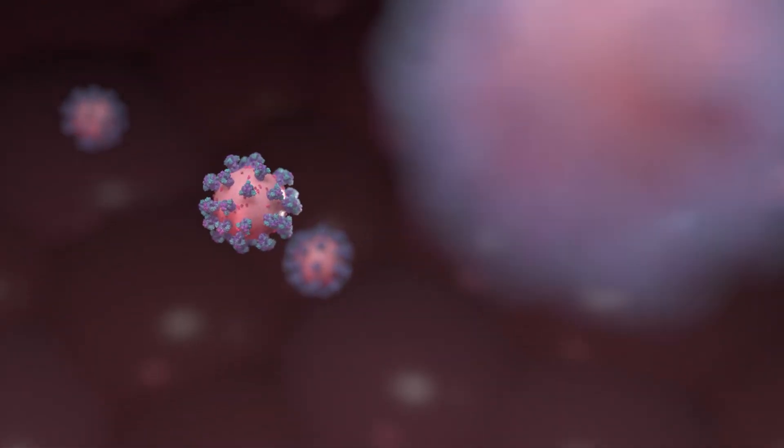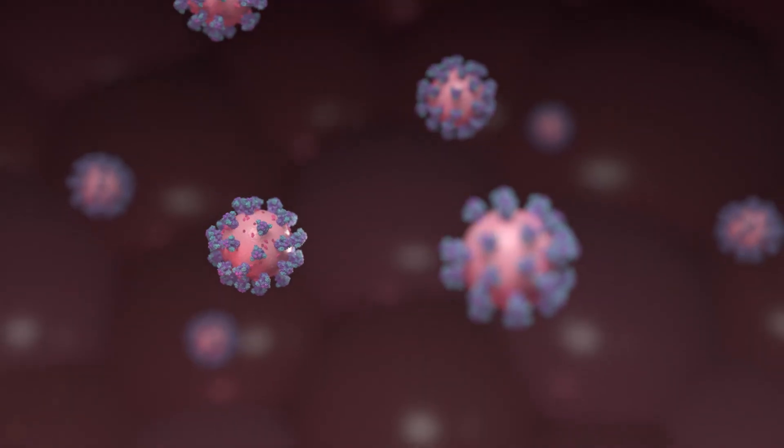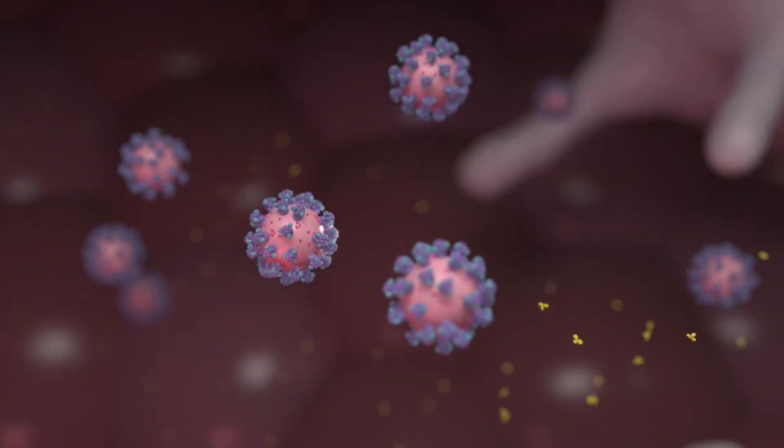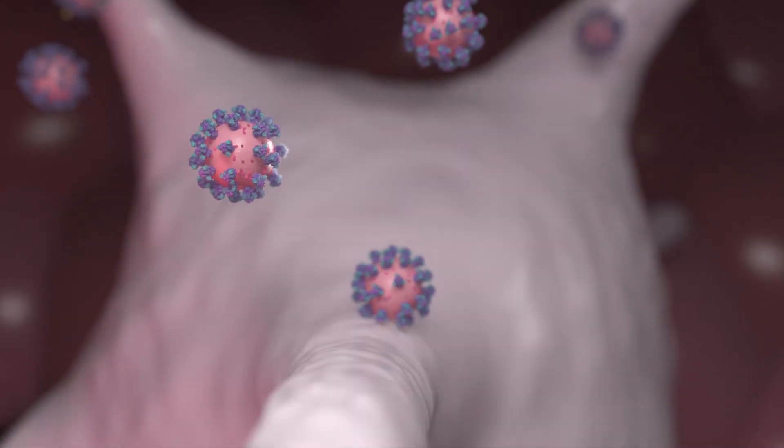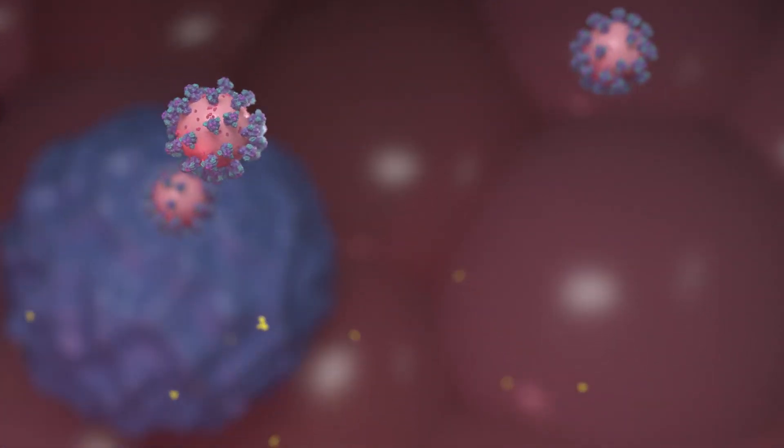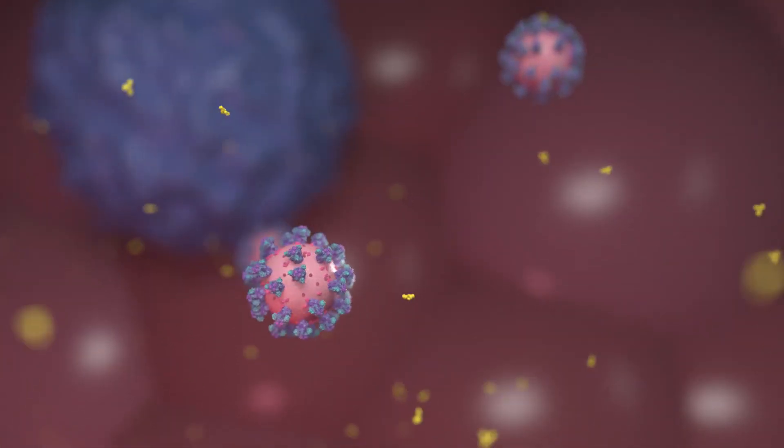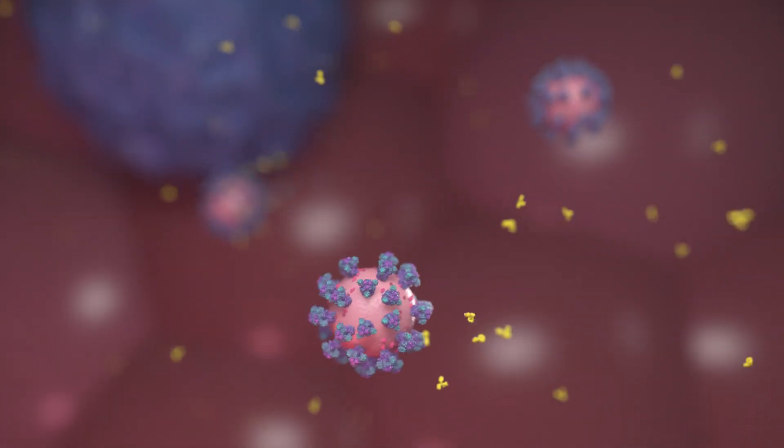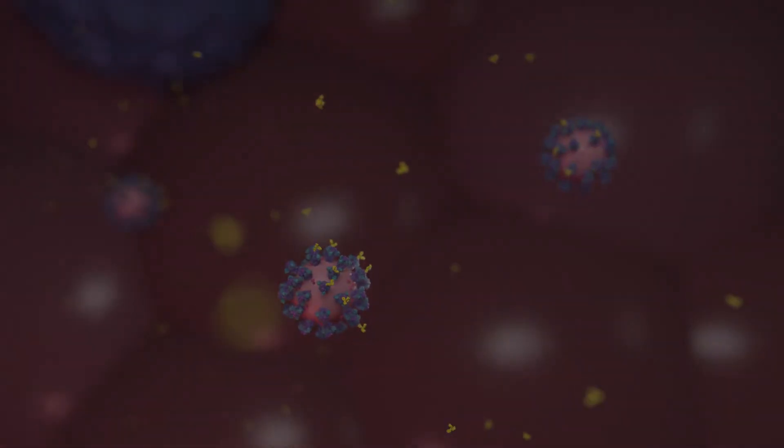In this way, some of the B-cells or T-cells induced through the vaccine are maintained as memory cells for a long time, and when the coronavirus actually invades later, by inducing a much stronger immune response immediately, it is possible to prevent infection or eliminate the virus.